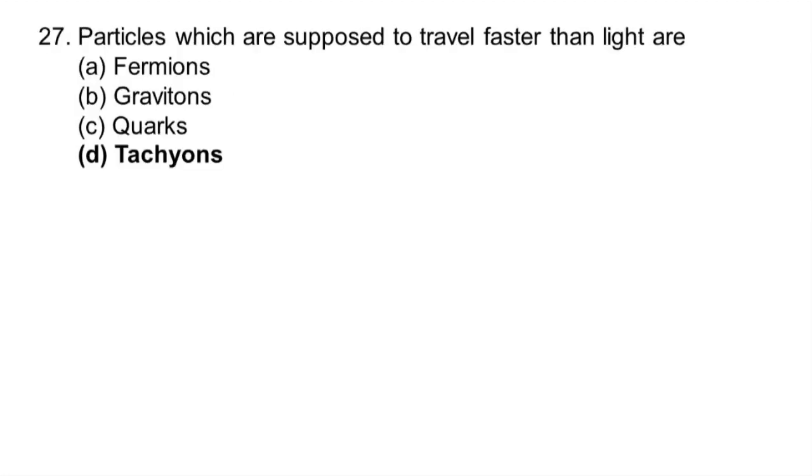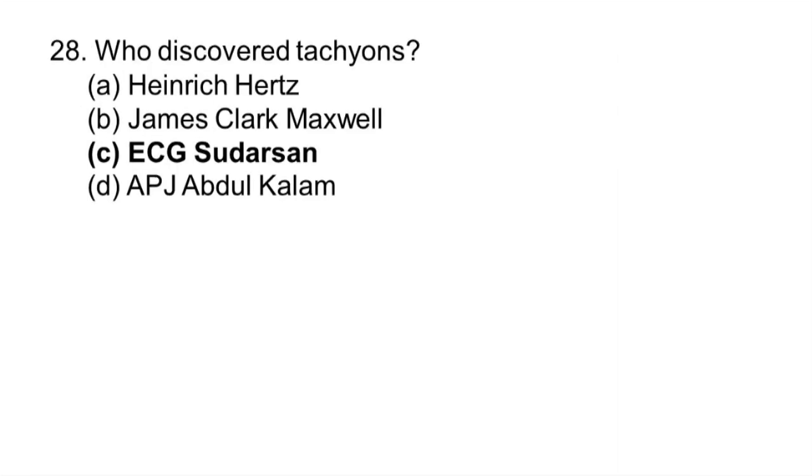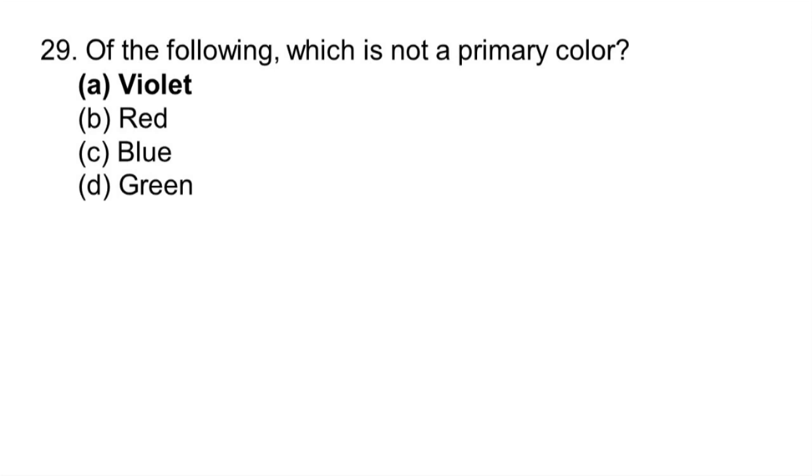Particles which are supposed to travel faster than light are tachyons. Who discovered tachyons? ECG Sudarshan. Of the following which is not a primary color? Violet.